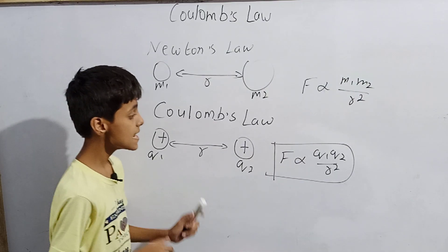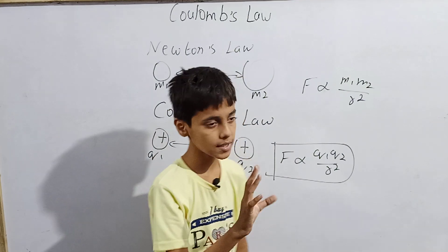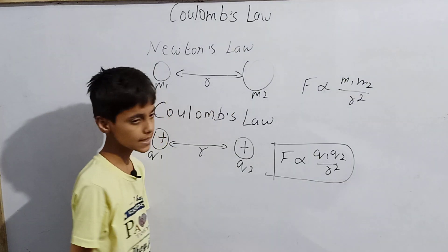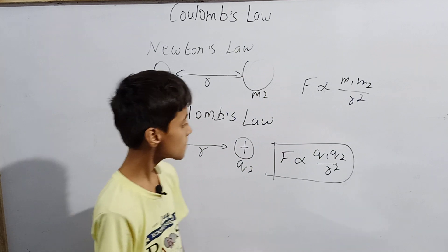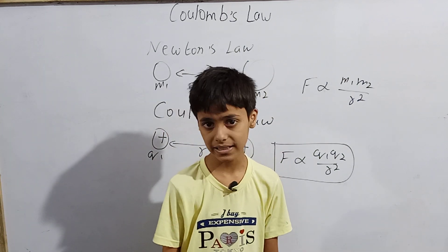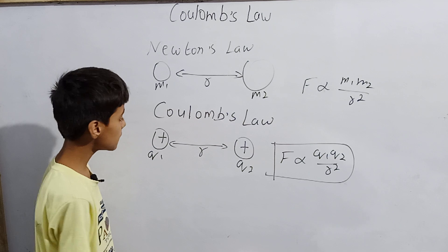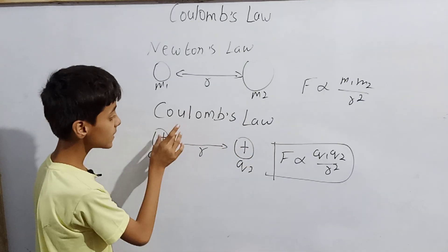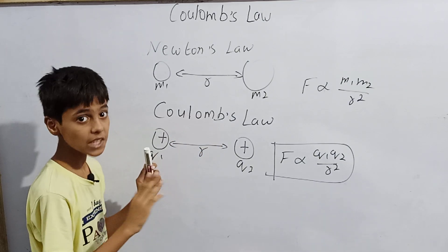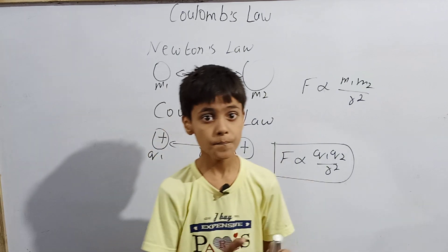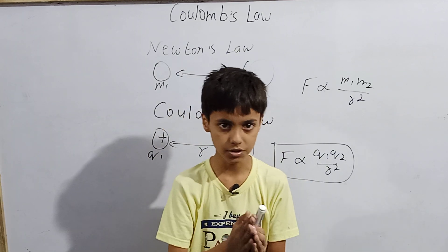Now here, gravitational force is always attractive. What about electrostatic force? It may be attractive or repulsive. How do we know whether the force is attractive or repulsive? If we have two positive charges, they will repel each other. Two negative charges will also repel each other. But one negative and one positive charge will attract each other.